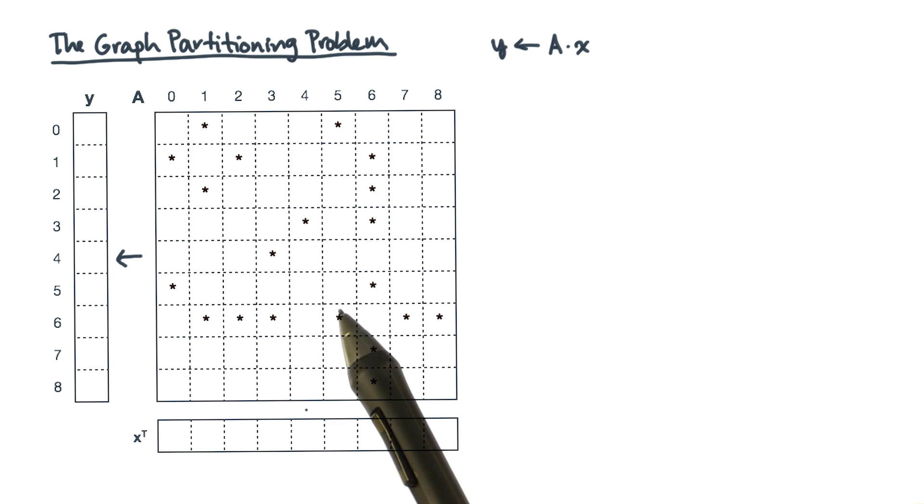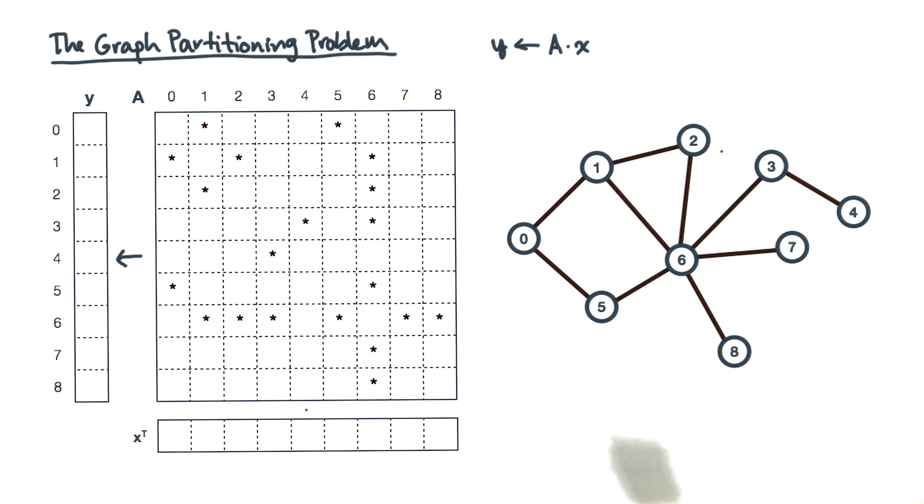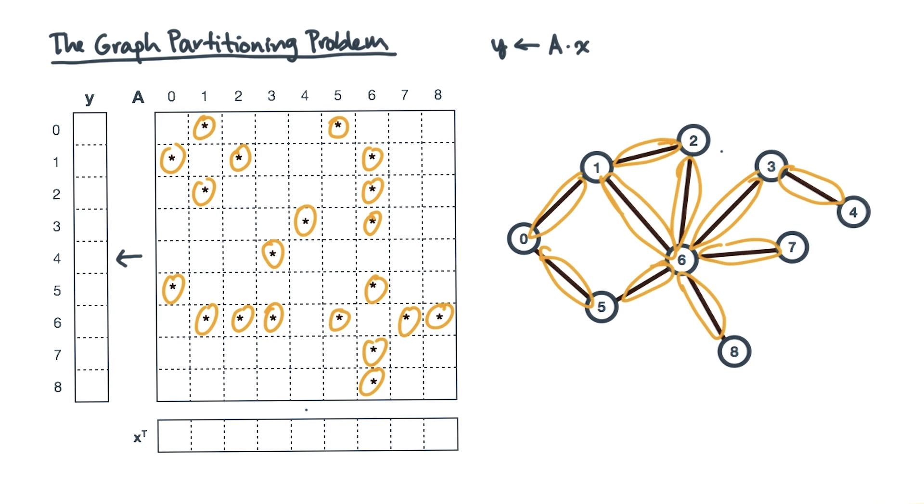Let's motivate the graph partitioning problem through a different problem. Suppose I want to multiply a sparse matrix A times a vector x. Remember the duality between matrices and graphs, meaning this sparse matrix has this equivalent graph representation. The rows and corresponding columns of the matrix are vertices, and the non-zeros are edges.